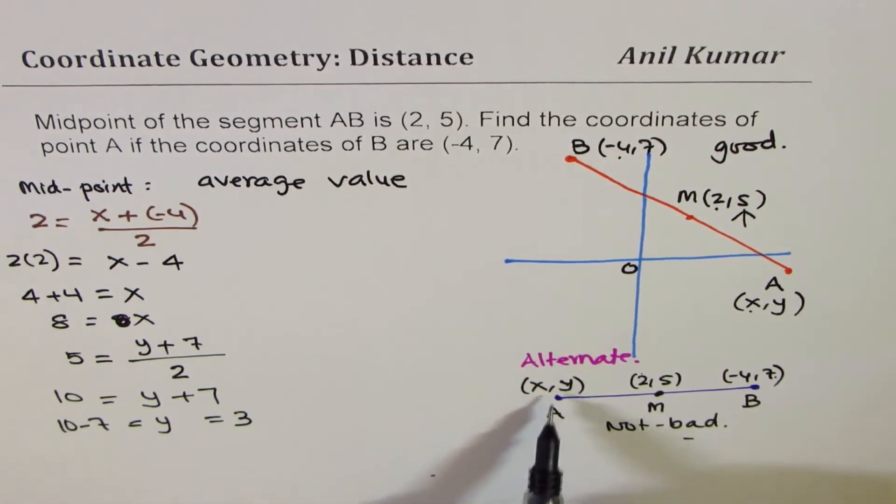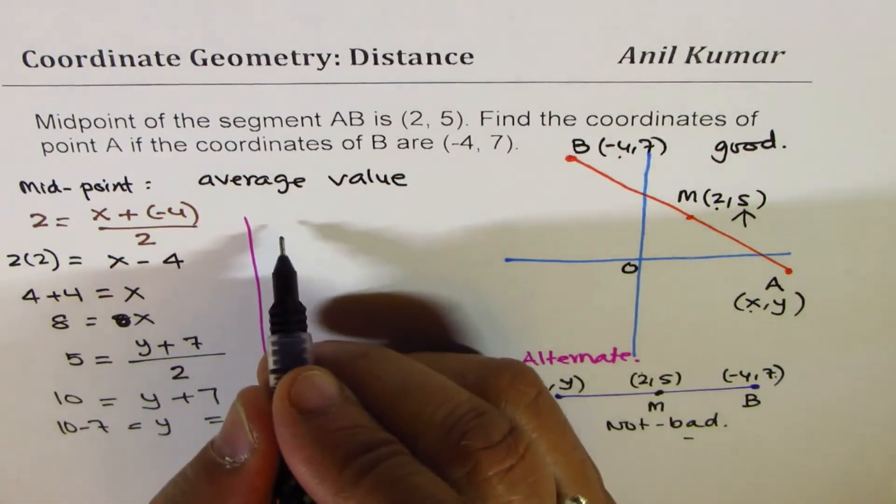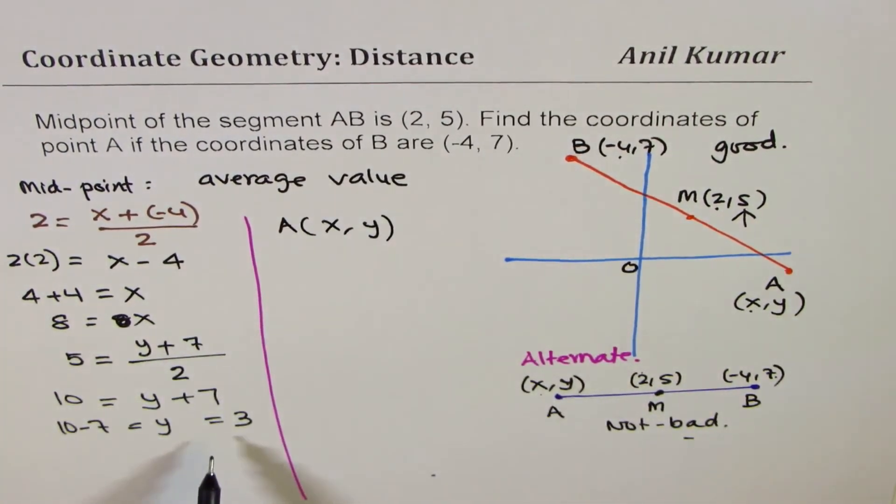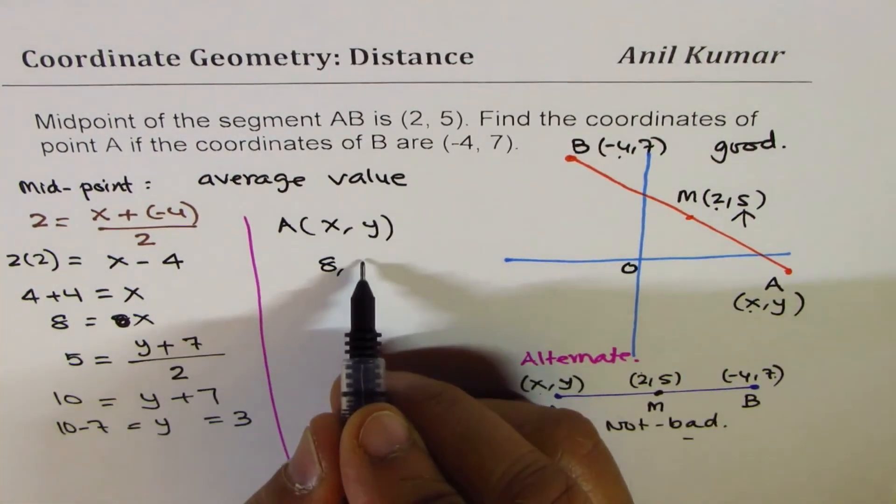So we get our point (x, y) as coordinates for point A, which is x, y, will be x value of 8 and y value of 3.